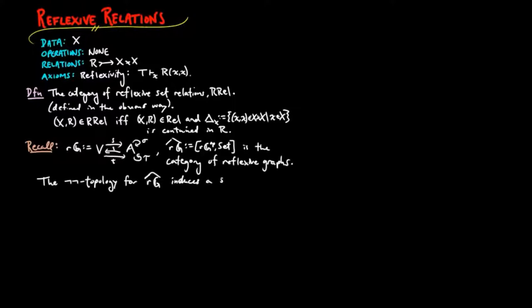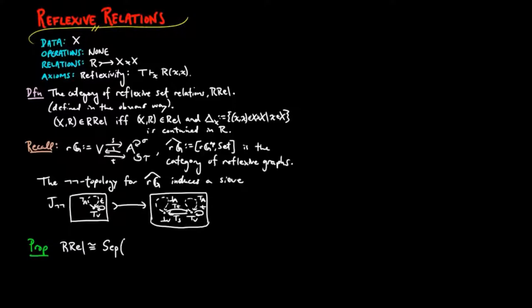The double negation topology gives us the following sub-object of the sub-object classifier, and similar to the case of relations, we have the category of reflexive relations is isomorphic to the category of separated reflexive graphs.